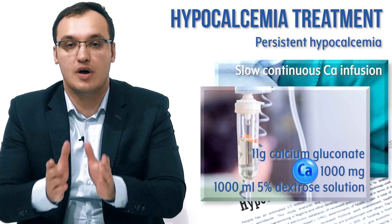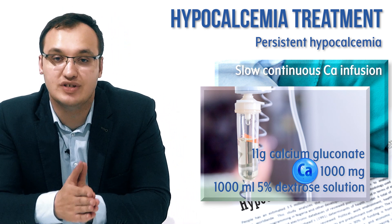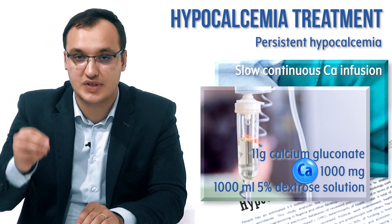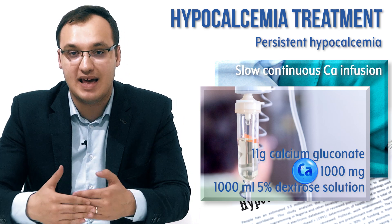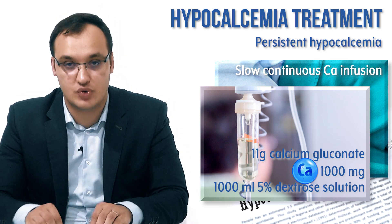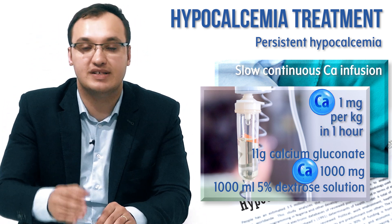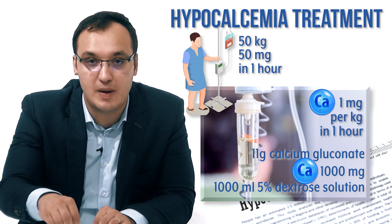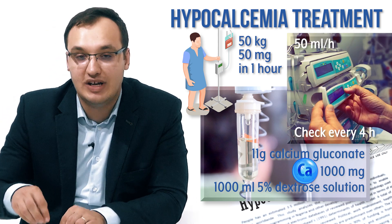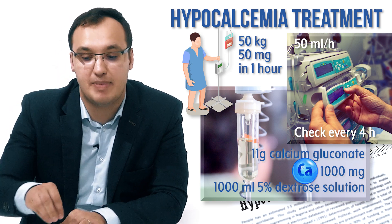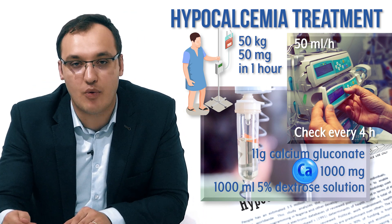For the slow infusion: put 11 grams of calcium gluconate — which contains 1 gram (1,000 mg) of elemental calcium — into 1,000 milliliter of 5% dextrose, giving a concentration of 1 milligram per milliliter. The rate is 1 milligram per kilogram per hour. For a 50 kilogram patient, give 50 milligram per hour, which means 50 milliliter per hour on the infusion pump.